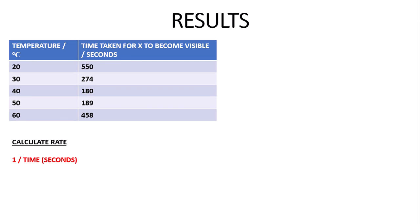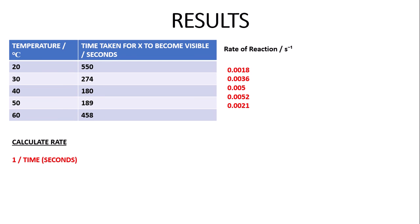The next thing you need to do is calculate the rate of reaction from your results. As we are concluding our rate from a time, we just need to do 1 divided by our time in seconds — it's a pretty easy calculation. So 1 divided by 550 is 0.0018, and so on for all the temperatures. Normally you would write these in standard form to make it more concise, but I haven't done that here because the graph didn't come out right.